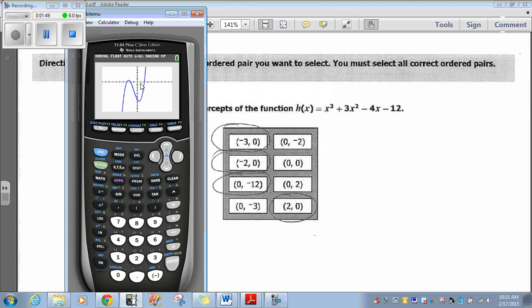So it looks like I have an intercept here, here, here, and here. Well, that looks like 1, 2, 0, which is what I circled here. This looks like a negative 3, 0, which is what I circled, then negative 2, 0, which I circled here, and then come down to 0, negative 12, which is what I circled here. So that's 1, 2, 3, 4.